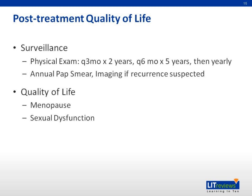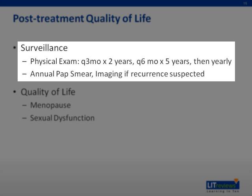Even though treatment of early stage cervical cancer can be quite successful, close follow-up is required to evaluate for disease recurrence. Recurrence, if it occurs, is most likely at the surgical margins — in this case, the vaginal cuff. Therefore, full physical exam with speculum and bimanual exam to assess for recurrence should occur every three months for the first two years, and then every six months until the patient is five years away from treatment. She should receive pap smears of the vaginal cuff at least yearly. There are no set imaging guidelines, but imaging should occur if there is any suspicion of disease recurrence.